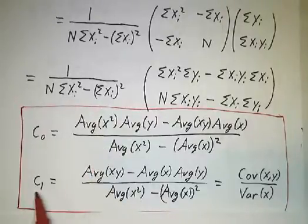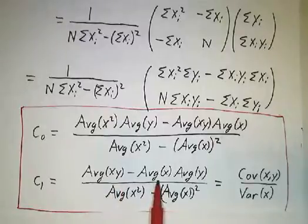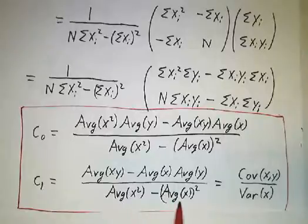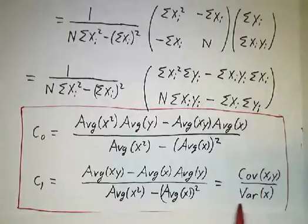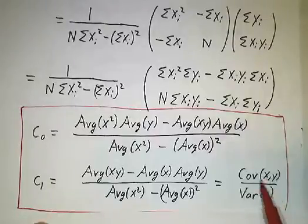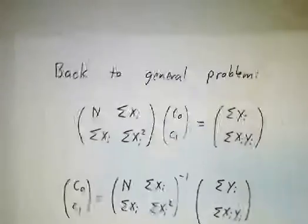In particular, you're usually most interested in the slope. The slope is the average of xy minus the average of x times the average of y, divided by the average of x² minus the average of x squared. The numerator has a name: it's called the covariance of x and y. The denominator also has a name: it's called the variance of x. Covariance and variance come up a lot in probability and statistics.